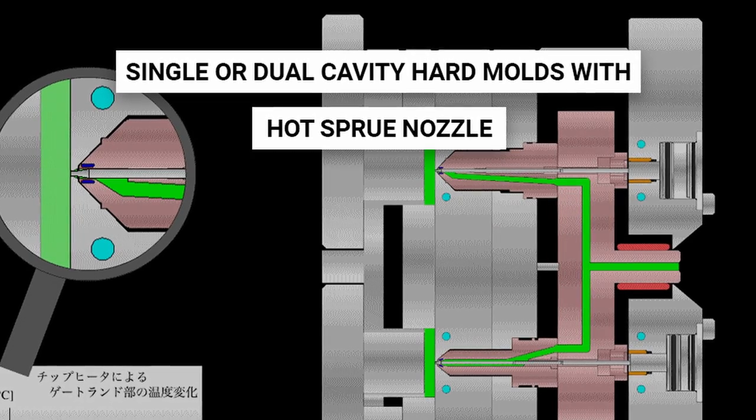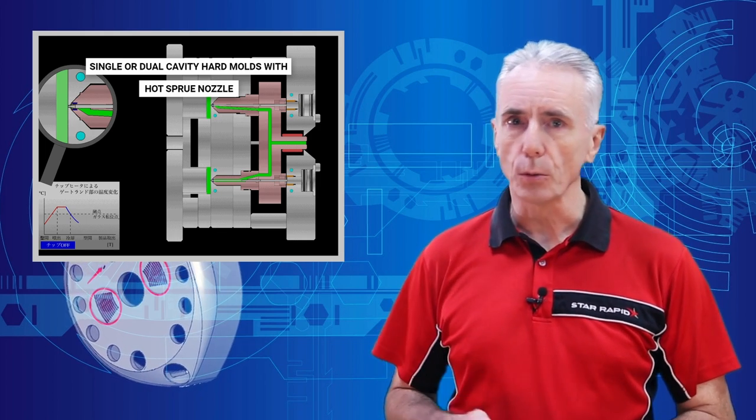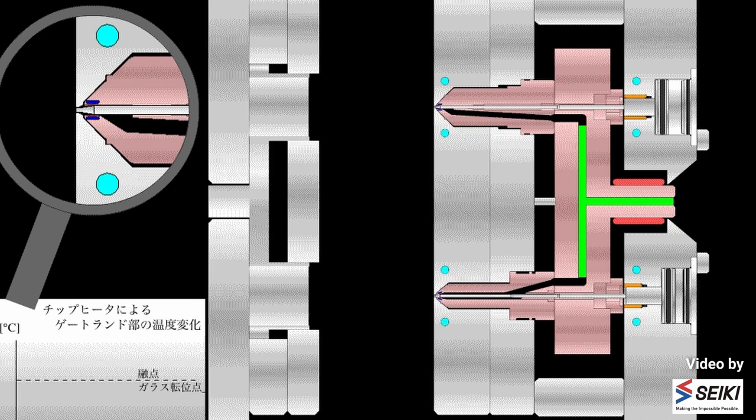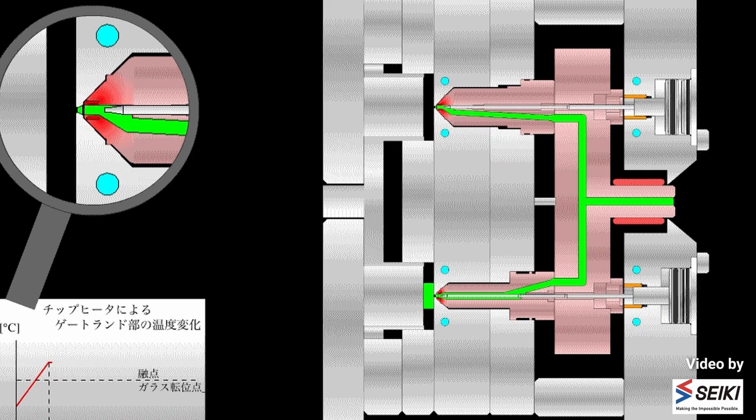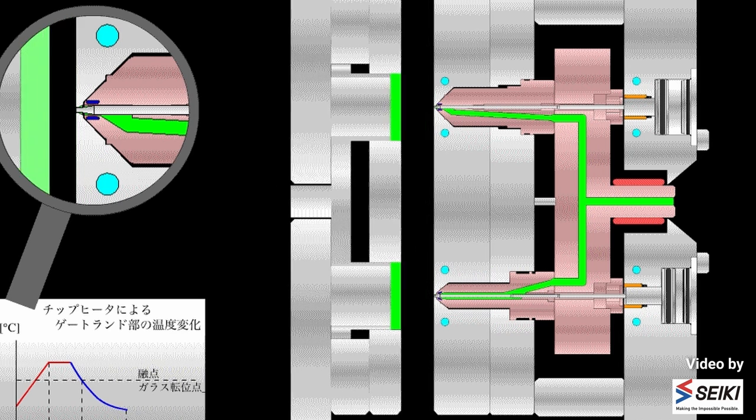Single or dual cavity hard molds with a hot sprue nozzle. Then we move up to hardened tool steels. Generally speaking, tool makers do not harden the entire mold unless it's very small. We typically use a soft set of bolsters and into those bolsters we set fully hardened core and cavity inserts.